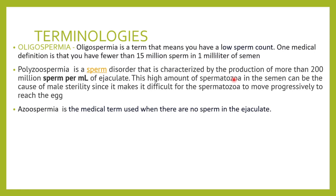There are a few terminologies to remember when discussing sperm count. Oligospermia is when you have a low sperm count — when sperms are less than 15 million per ml of semen. Polyzoospermia is when the sperm count is very high — more than 200 million per ml. Polyzoospermia can also cause infertility, because a large number of sperms impedes progressive movement of spermatozoa.